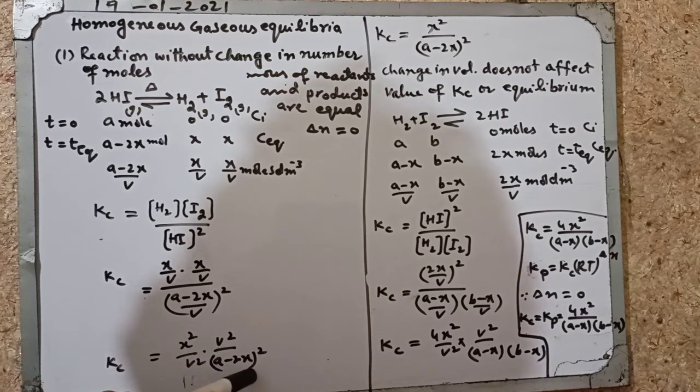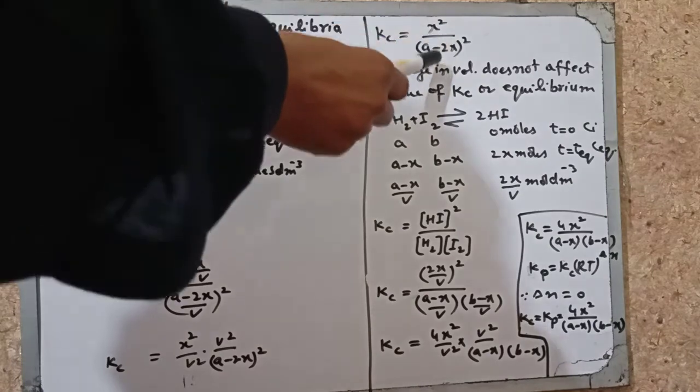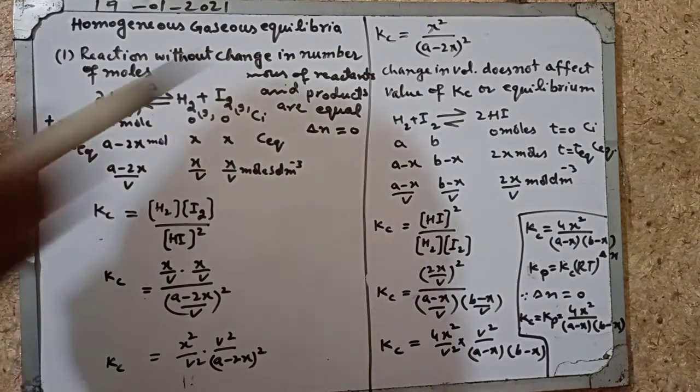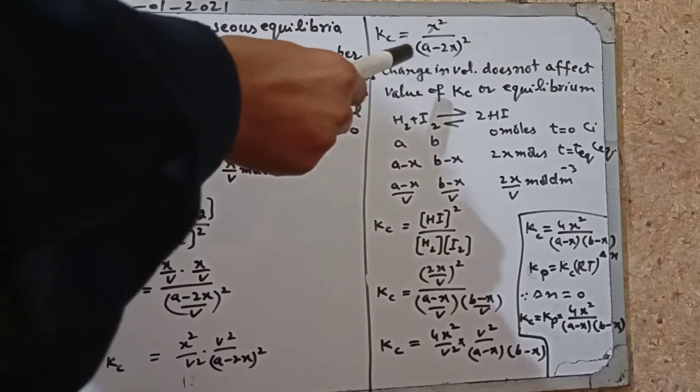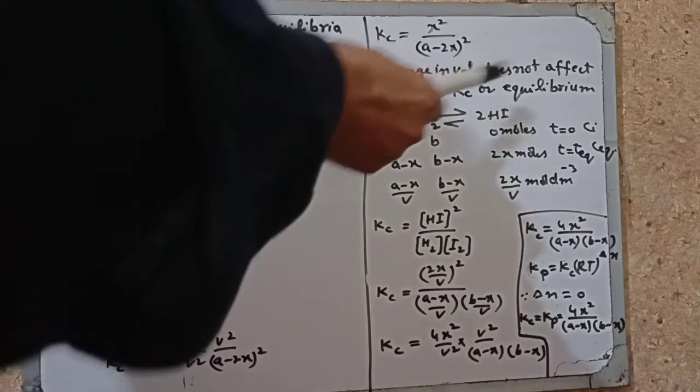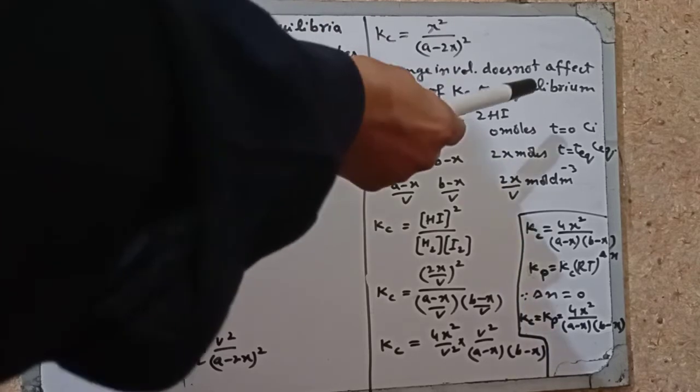This gives x-square over v-square divided by a-2x-square over v-square. v-square cancels. Kc becomes x-square over a-2x-square. If you solve, there is no v term, therefore Kc does not depend upon the volume. Change in volume does not affect the value of Kc or the equilibrium.